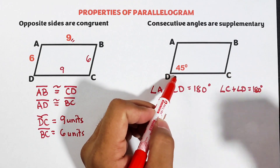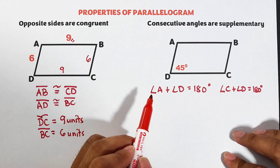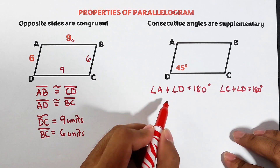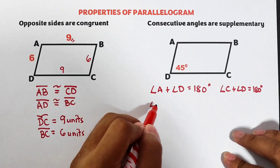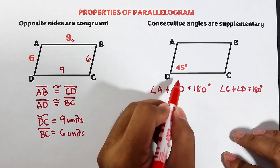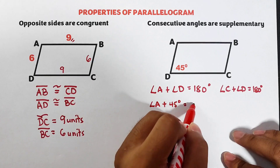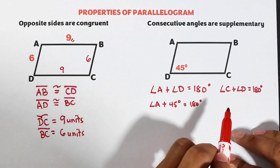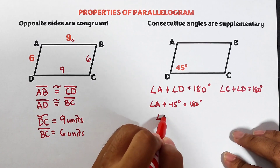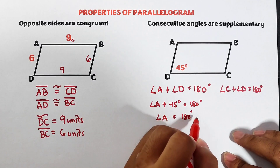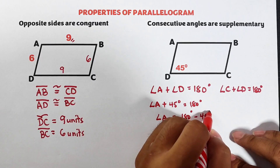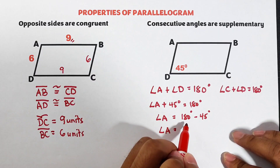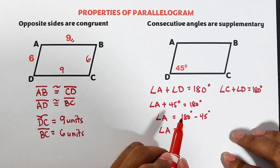These two angles have a sum equal to 180 degrees. Let's figure out the value of angle A. All you need to do is set up the equation: angle A plus the measurement of angle D, which is 45 degrees, is equal to 180 degrees. Next, we transpose 45 degrees, so angle A is equal to 180 degrees minus 45 degrees.